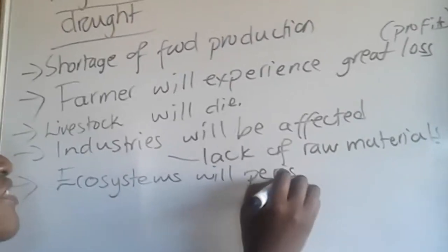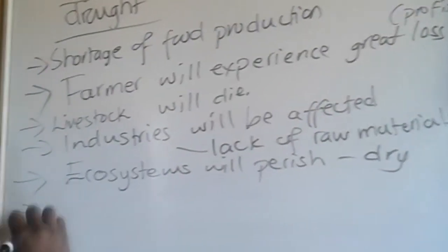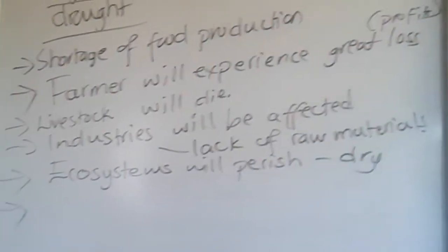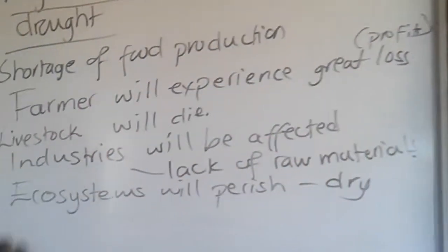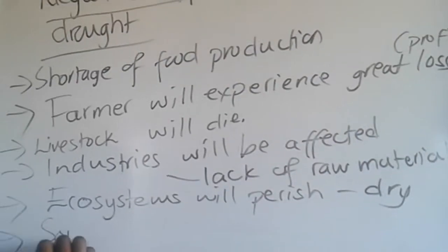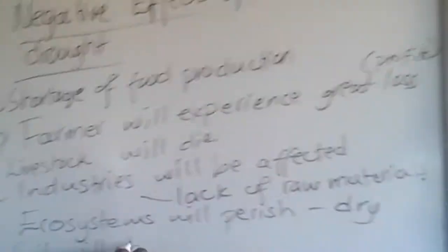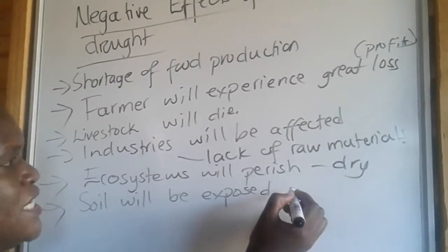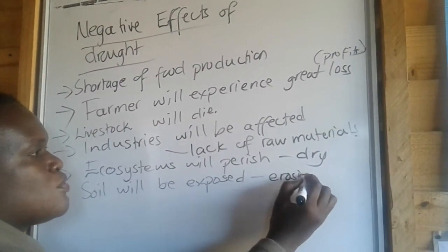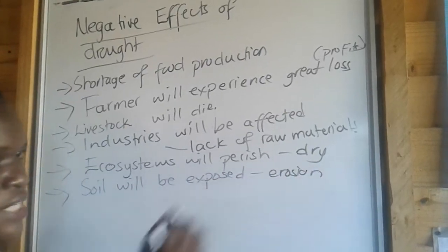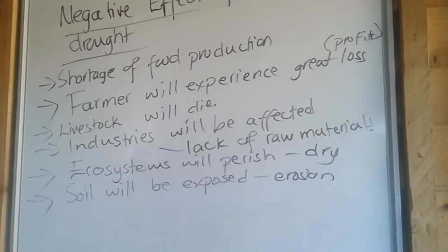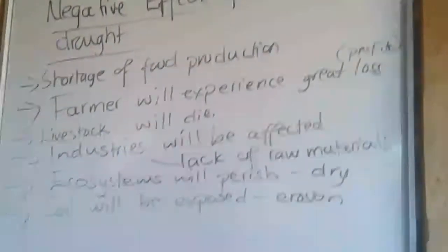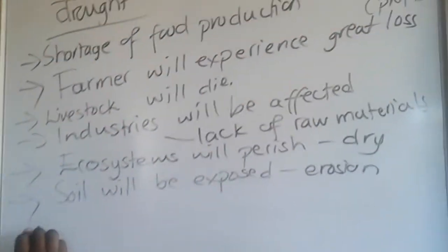Our ecosystems will perish — they are going to become drier and drier. It also means that soil will be exposed, which promotes soil erosion and leads to soil infertility.